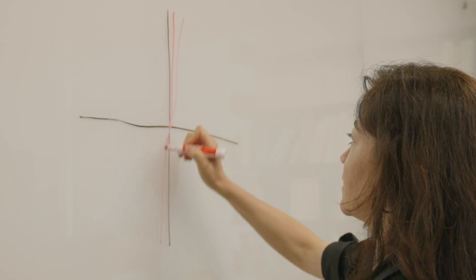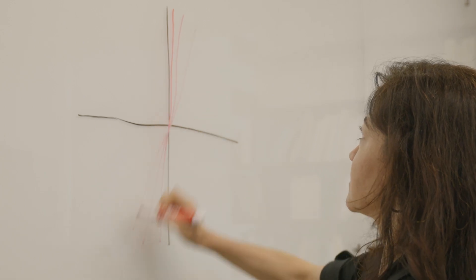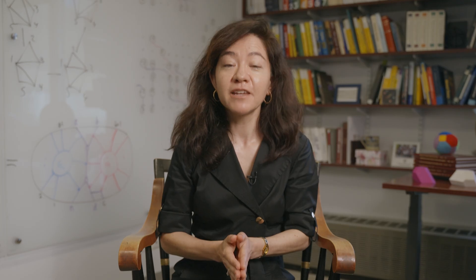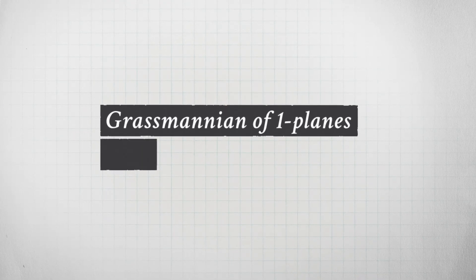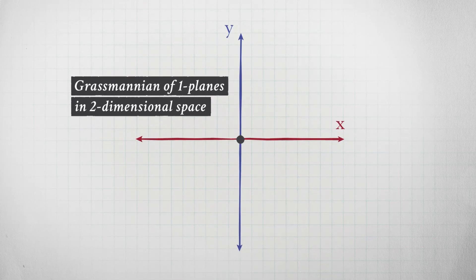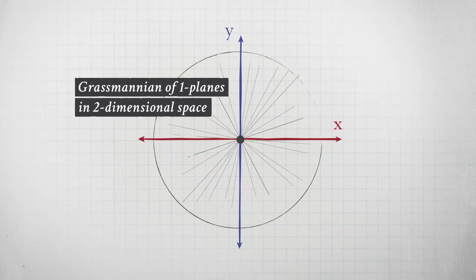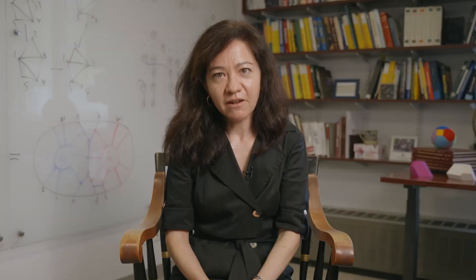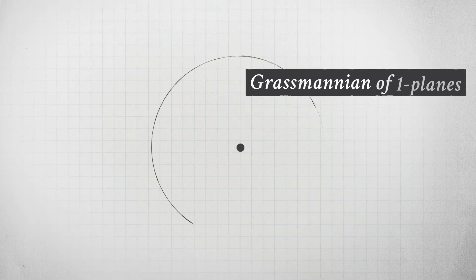The Grassmannian is a mathematical object that encompasses the set of all k-dimensional subspaces of an n-dimensional vector space. For example, the Grassmannian of one-planes in two-space is the set of all lines through the origin in two-dimensional space. We can also talk about the Grassmannian of k-planes in three-dimensional space.